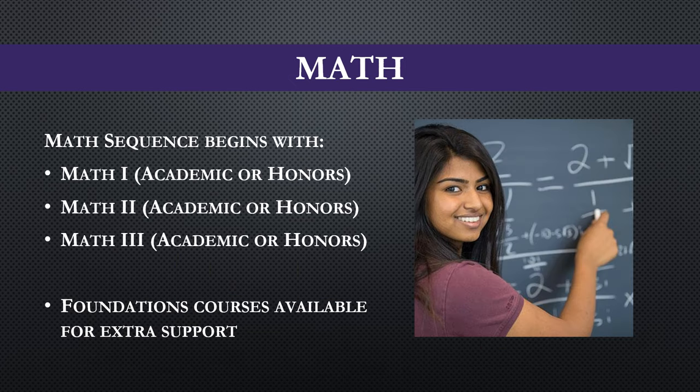There are four math credit requirements for graduation. Math 1 leads into Math 2, which then leads into Math 3. Academic and Honors courses are available for all three levels. If you struggle with math, there are foundations courses you can take as an elective to help prepare you for the core math class. When signing up, be sure to sign up for the foundations class along with your core math class — for example, Foundations of Math 2 and Math 2 in the same school year. This is for students who would like an introduction to the core math class and feel it would be beneficial. This is not required.